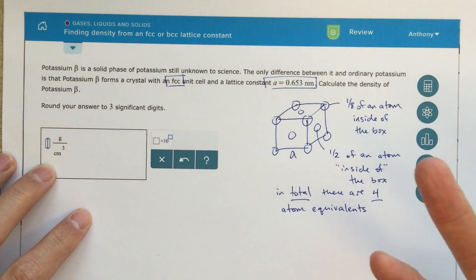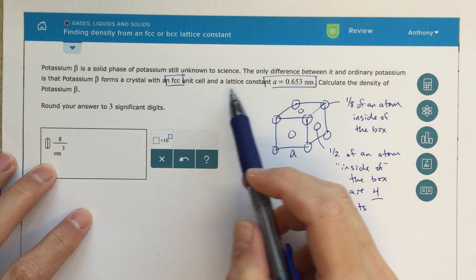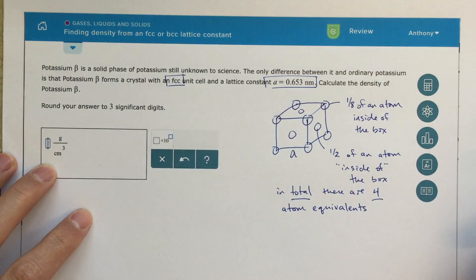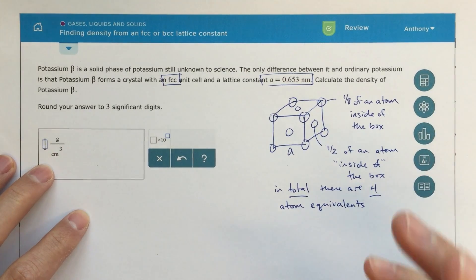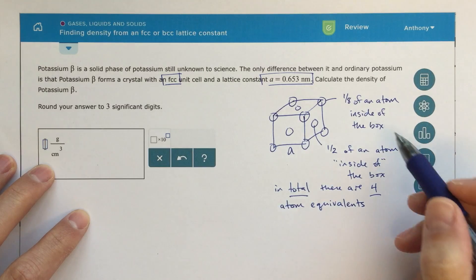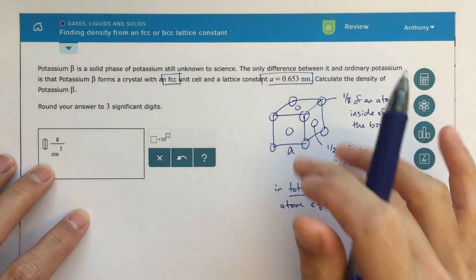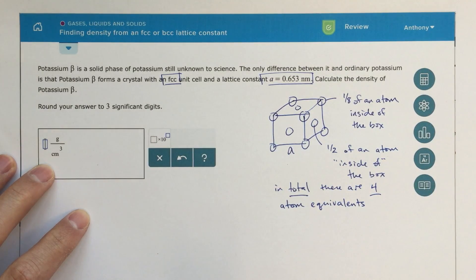In a face-centered unit cell, there will always be 4 total atom equivalents. In a body-centered, so the other option here will be BCC, body-centered, that's going to be different. You need to be able to have a picture of what that body-centered cubic structure is, and then be able to determine using the same strategy, how many atom equivalents are there inside of the box. That's the first piece of information that we need to know.